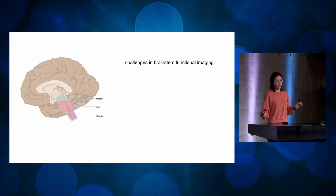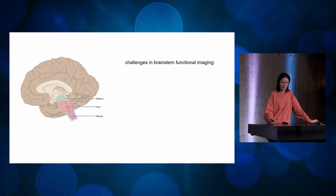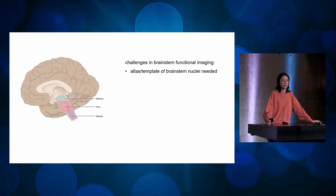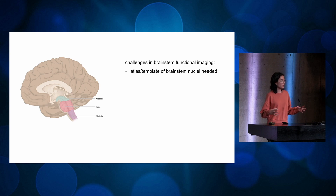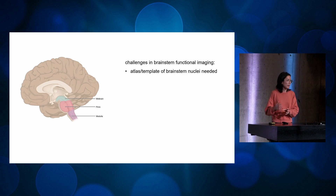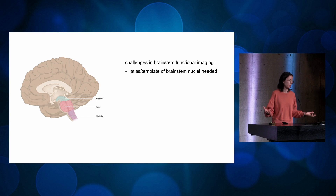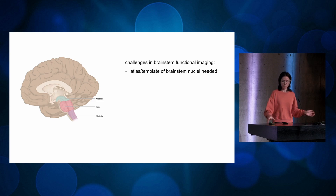There's a reason why we don't know much about in vivo brainstem function — functional imaging of the brainstem is extremely difficult. One challenge is that there used to be no complete atlas or template of the brainstem. People interested in brainstem imaging would delineate one specific nucleus themselves, which is time-intensive, and then look at connectivity between that nucleus and the cortex. There wasn't a standardized template, so whole-brainstem connectivity wasn't really possible or reproducible.